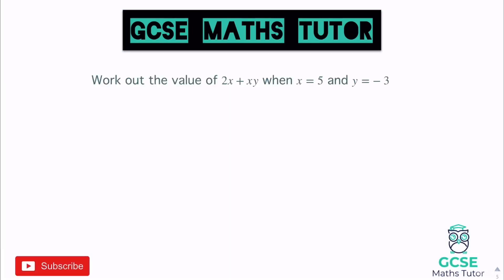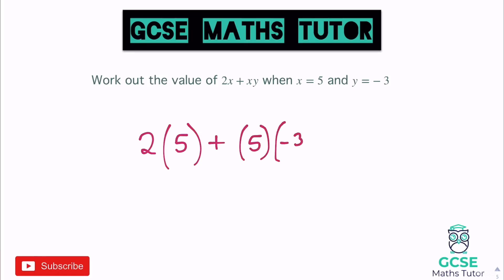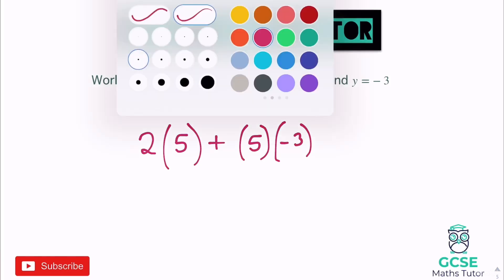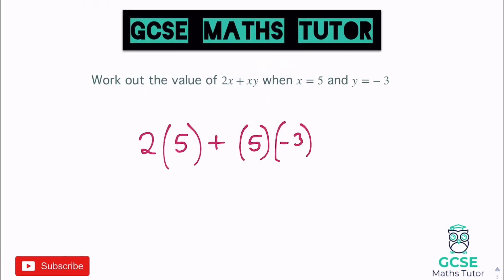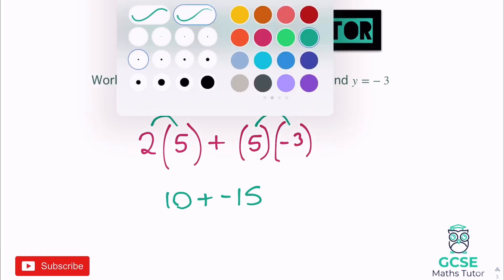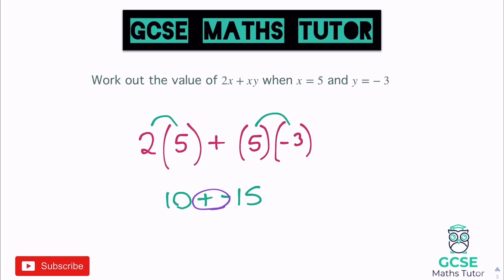Now something different: work out the value of 2x + xy when x is 5 and y is negative 3. We substitute in as before: 2 lots of 5, add xy which means x times y — so 5 multiplied by negative 3, written as 5 lots of negative 3 in a bracket. Working this out: 2 times 5 is 10, add 5 lots of negative 3 which is negative 15. So we have 10 add negative 15, which means 10 take away 15, giving negative 5.